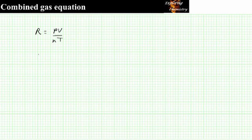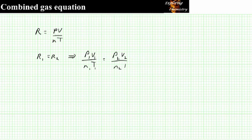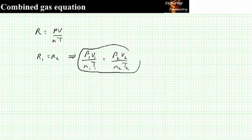We have two states of the system in which R is a constant. So R is always going to be the same value. So this leads to the relationship P1V1 over n1T1 equals P2V2 over n2T2. And this is the Combined Gas Equation.